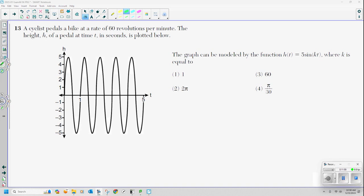I like this problem. I hate this problem. But I like it. Let's read it and let's knock it out the park. Kids, let's cook a little bit, chefs. Oh, you fellow chefs that are watching. Thirteen. A cyclist pedals a bike at a rate of 60 revolutions per minute. The height h of a pedal at time t in seconds is plotted below. Oh, I see it. It's beautiful. The graph can be modeled by the function h(t) = 5sin(kt). Where k is equal to what?